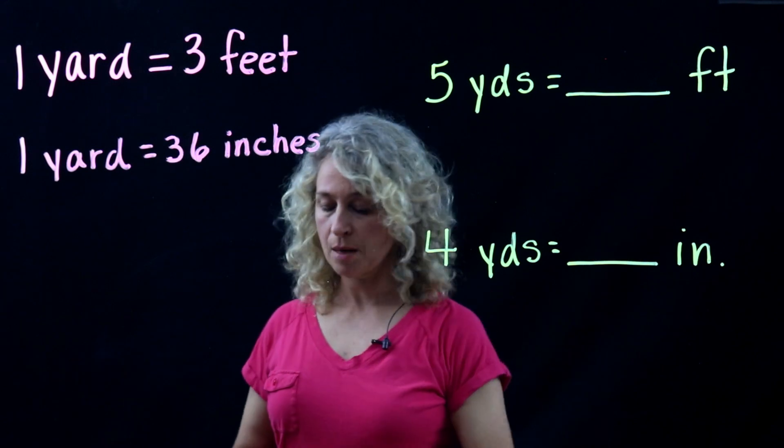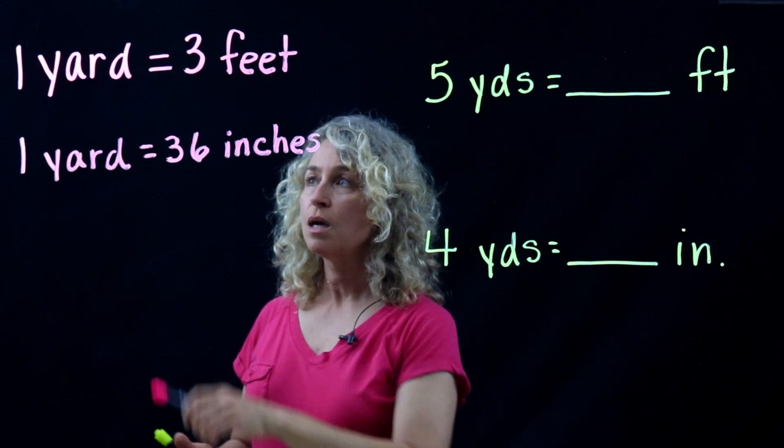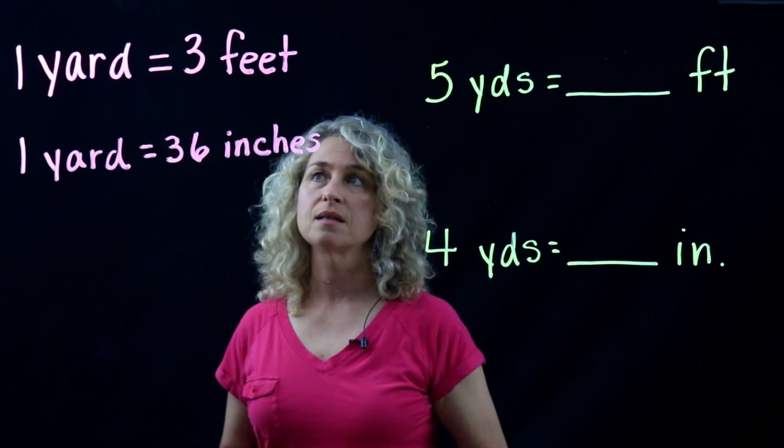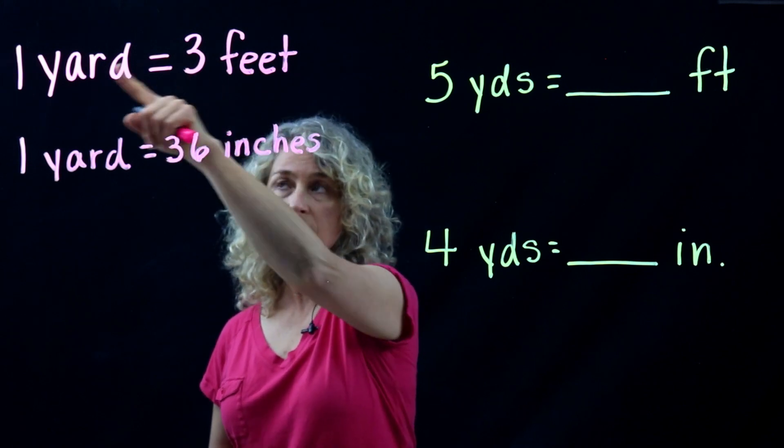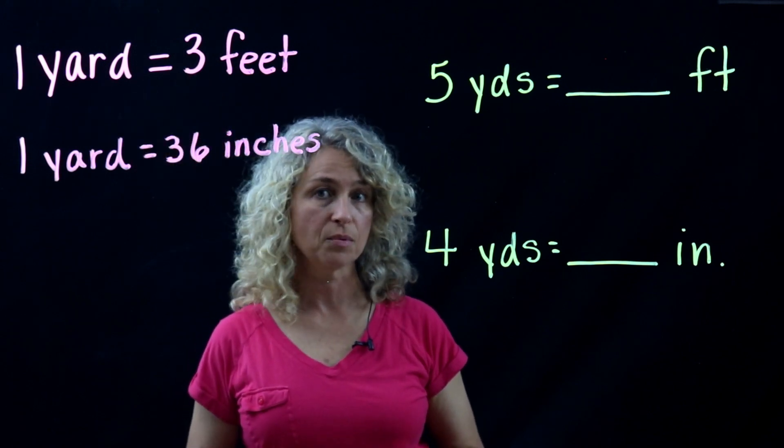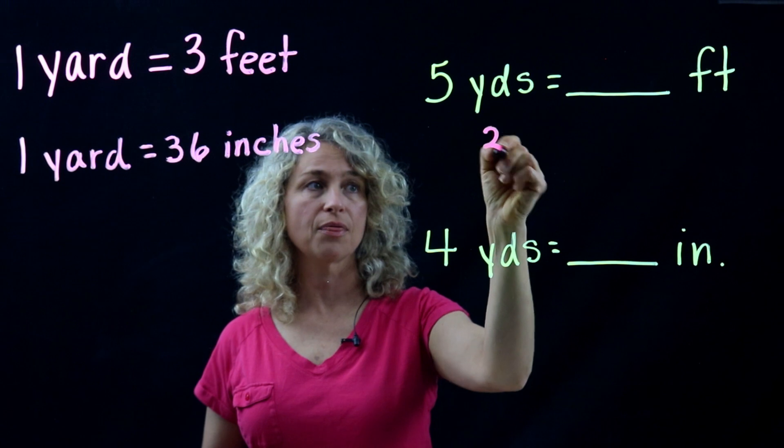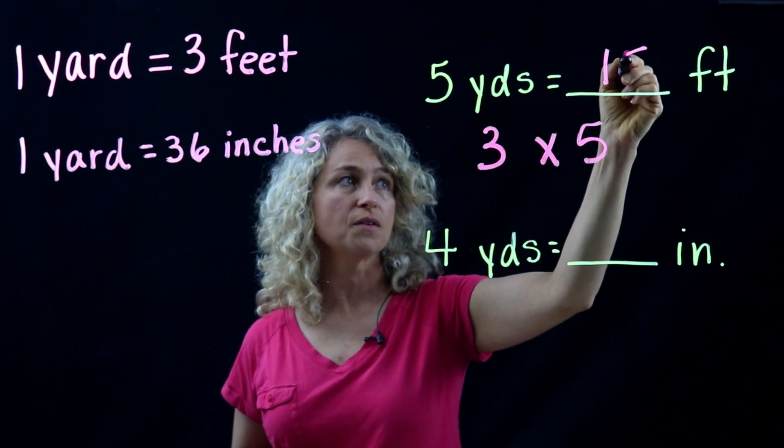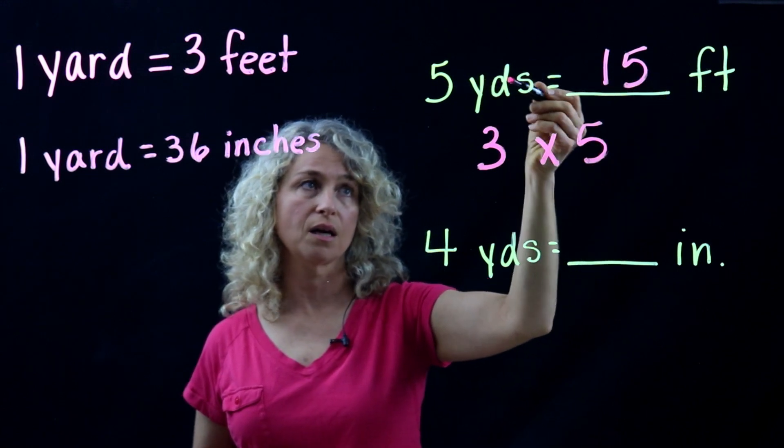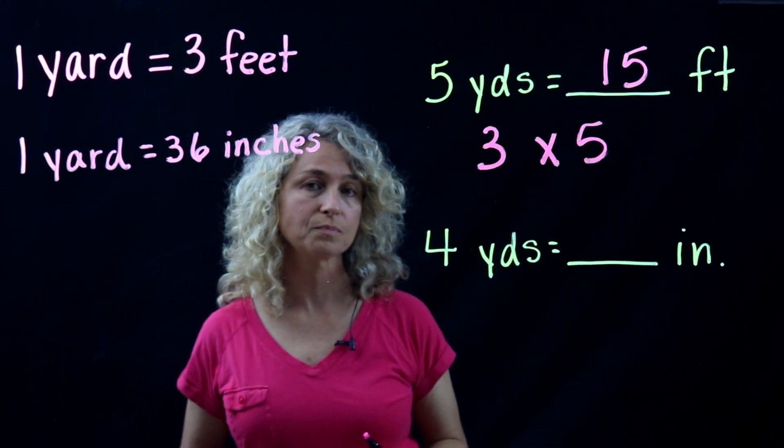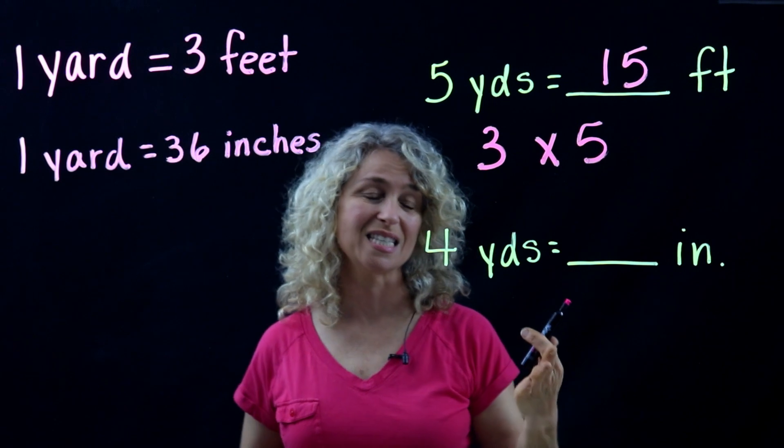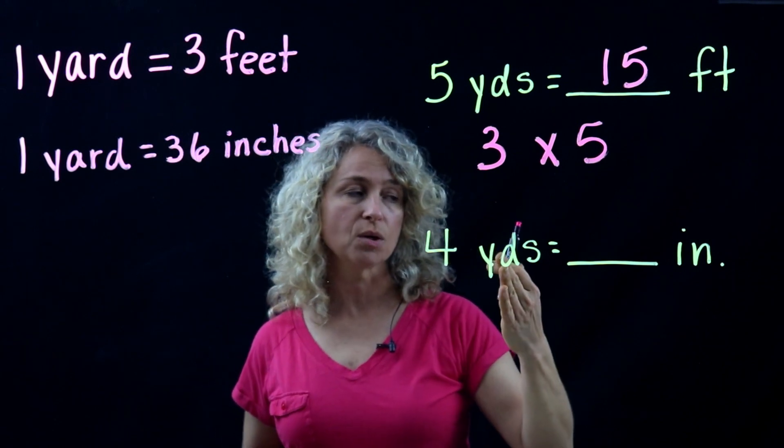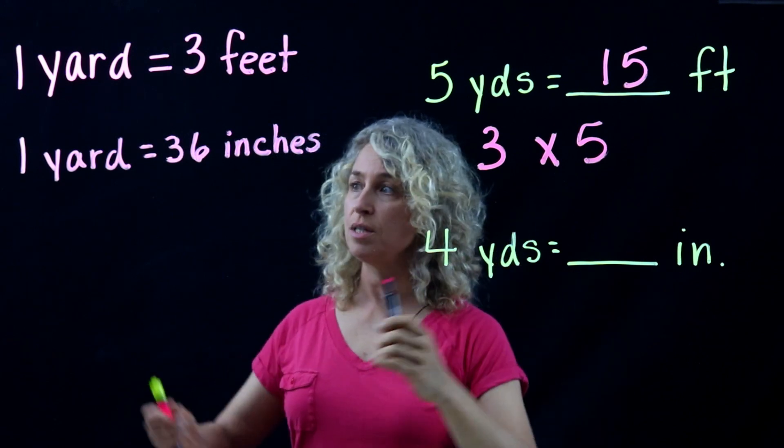Let's look at the first example: yards to feet. There are three feet in one yard, so it's simple as that. We're going to multiply three times five, and that's it. Fifteen feet are in five yards. All right, so let's look at this next one.